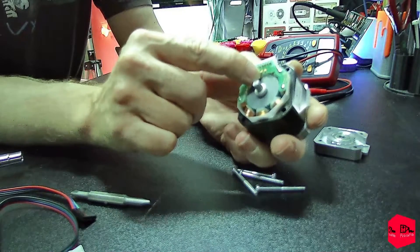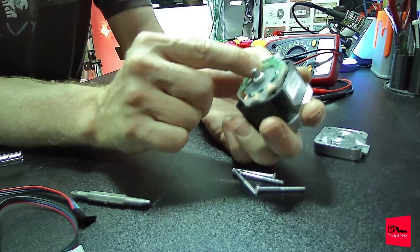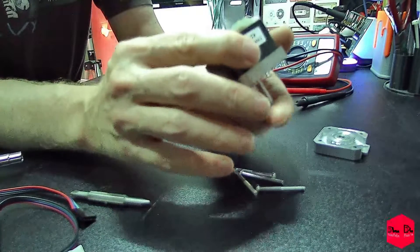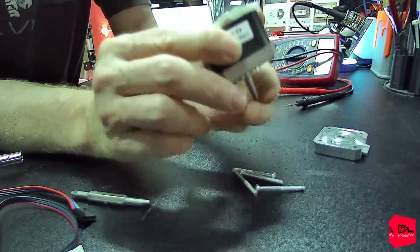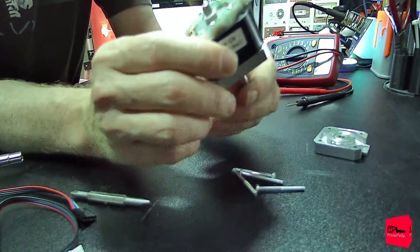There are two more pads here that don't have anything soldered to them. I'm assuming that's for a different phase type motor and these are just kind of a generic circuit board that goes on them.